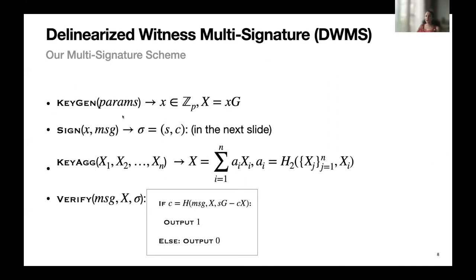The key generation algorithm of our scheme is the same as the Schnorr signature scheme. Key aggregation works as follows: given the public keys, the key aggregation algorithm finds a scalar — the output of random oracle H2 for each signing key — and then sums all these public keys. The verification process is also the same as the Schnorr signature scheme.